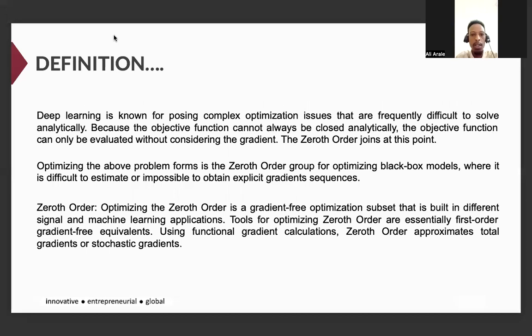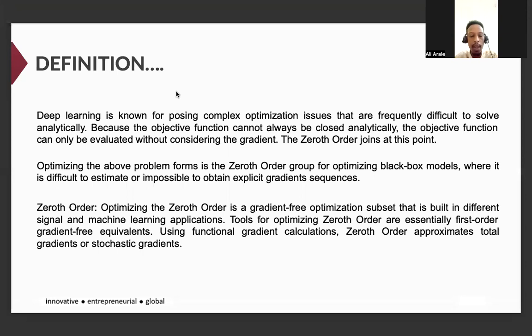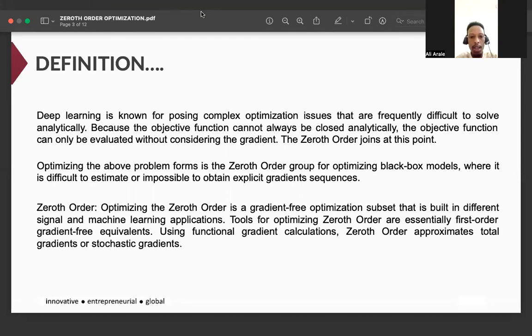Deep learning is known for posing complex optimization issues that are frequently difficult to solve analytically because the objective function cannot always be closed analytically. The objective function can only be evaluated without considering the gradient. Zero-order joins at this point. Optimizing the above problem forms the zero-order group for optimizing black-box models when it is difficult to estimate or impossible to obtain explicit gradient sequences.